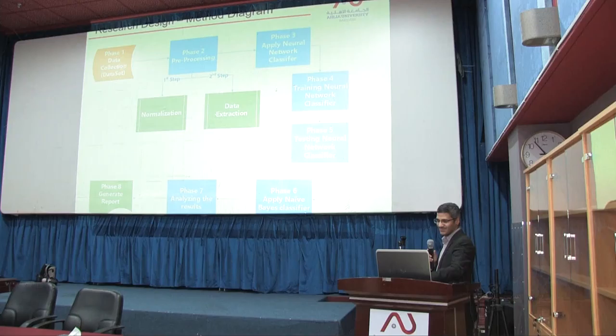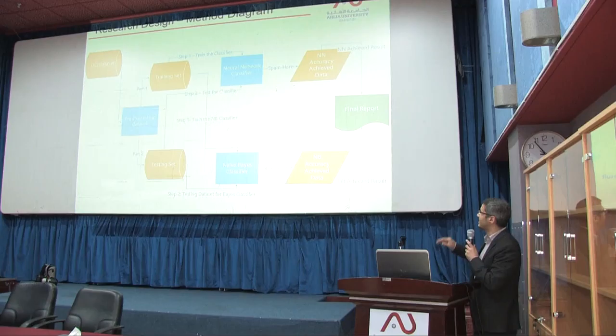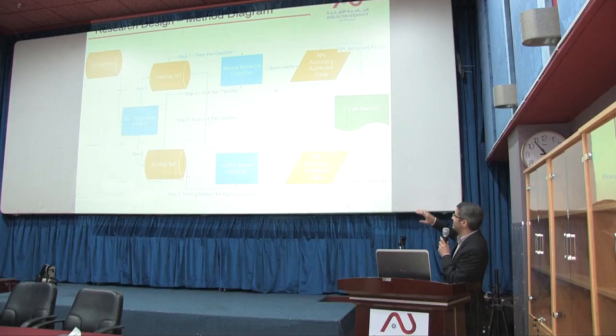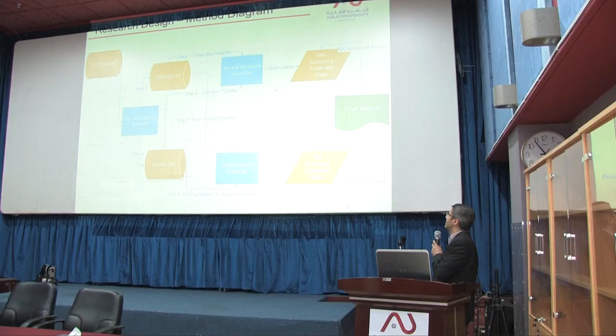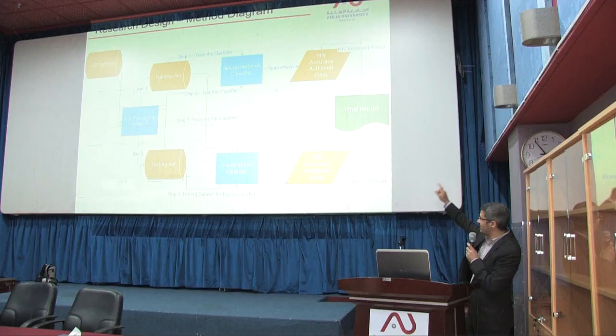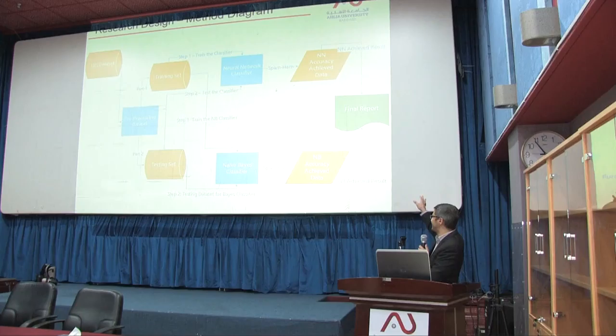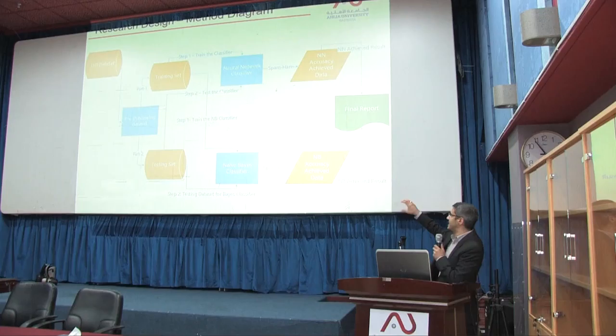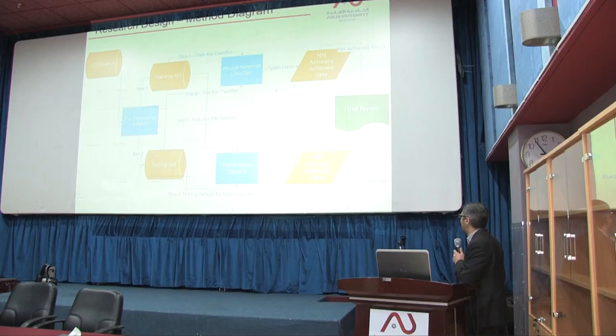Here is my system design. The UCI dataset will be processed using normalization and feature extraction, then split into a training set and a testing set. The training and testing sets will be given to the neural network, and we will record the results. It won't be the final result until we evaluate the testing set and check the neural network classifier's achievement. We will then do the same for the Naive Bayes classifier — perform training, record the accuracy results from the Naive Bayes classifier, and generate our report accordingly.